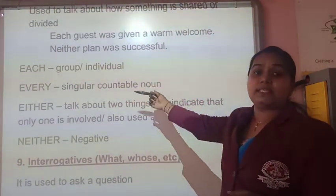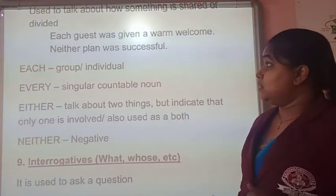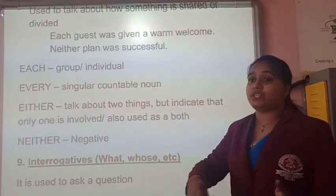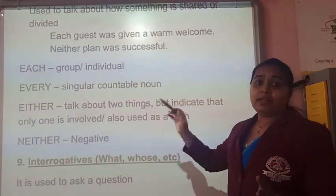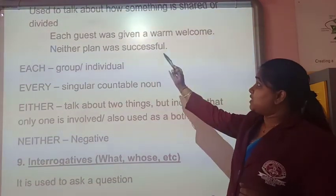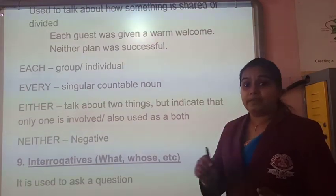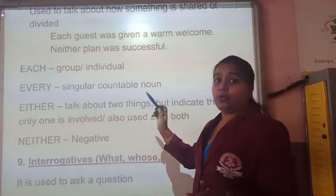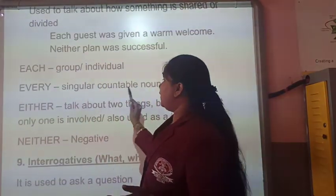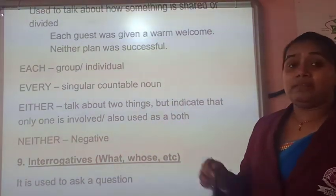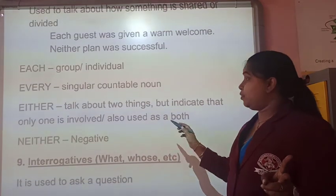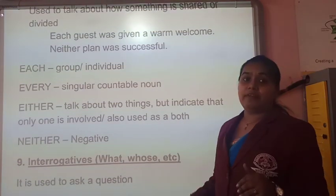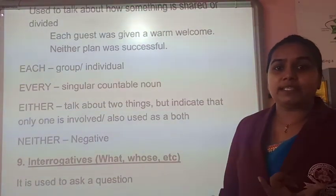The next one is distributive determiners, used to divide, distribute, or share something. For example: 'Each guest was given a warm welcome.' 'Neither plan was successful.' Keep in mind — 'each' is for a group or individual; 'every' is for a singular countable noun. When we use 'either', we talk about two things but indicate that only one is involved. 'Neither' is used when we have negative sentences.